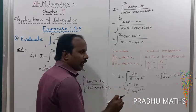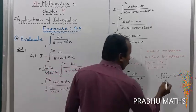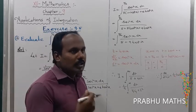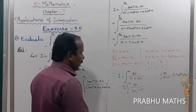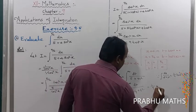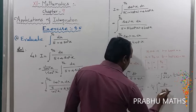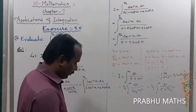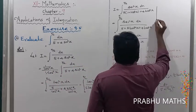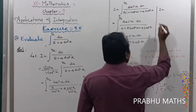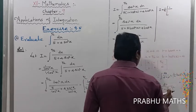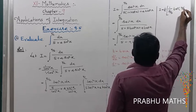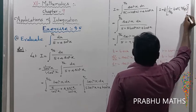Here a² equals 5/9, so a equals root 5 divided by 3. Now apply the formula: I equals (1/9) times (1/a) times tan⁻¹(t/a), with a replaced by root 5 over 3, giving (1/9) times (3/root 5) times tan⁻¹(t divided by root 5 over 3), evaluated from 0 to infinity.